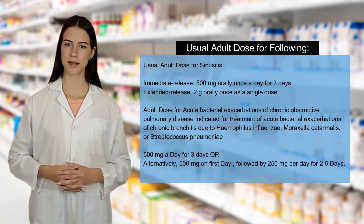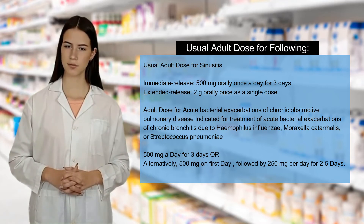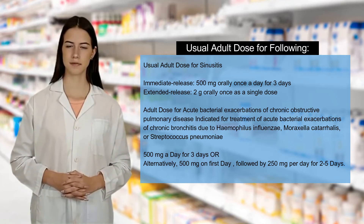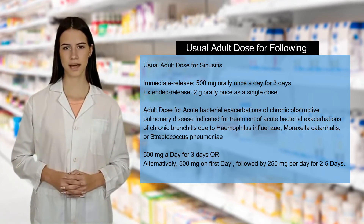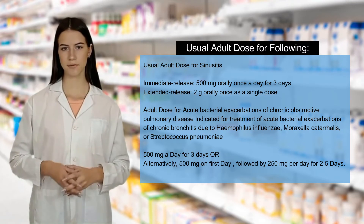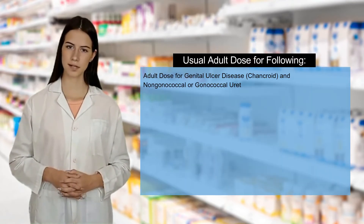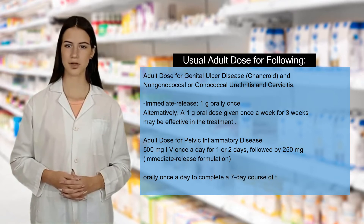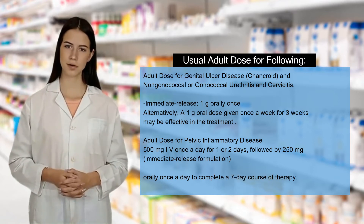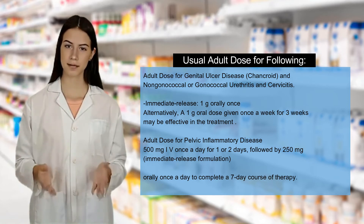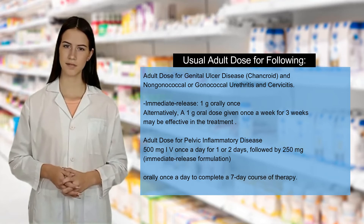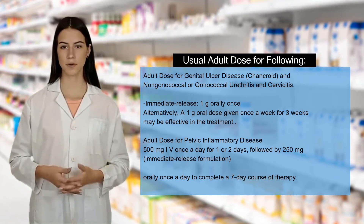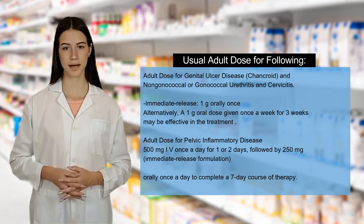Adult dose for acute bacterial exacerbations of chronic obstructive pulmonary disease: Indicated for treatment due to Haemophilus influenzae, Moraxella catarrhalis, or Streptococcus pneumoniae — 500 mg a day for 3 days, or alternatively 500 mg on day 1 followed by 250 mg per day for days 2 to 5. Adult dose for genital ulcer disease, chancroid, and non-gonococcal or gonococcal urethritis and cervicitis: 1g orally once; alternatively, 1g once a week for 3 weeks. Adult dose for pelvic inflammatory disease: 500 mg IV once a day for 1 or 2 days, followed by 250 mg immediate release orally once a day to complete a 7-day course.